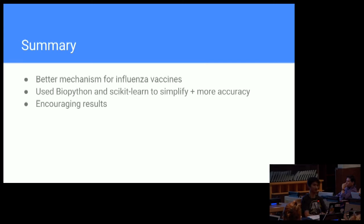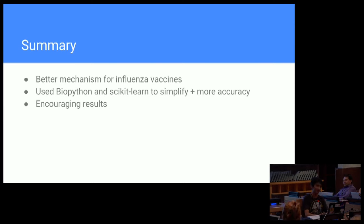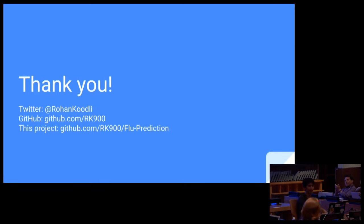To sum it all up, I wanted to create a better way for scientists to make vaccines for the flu. How I went about doing that was to predict how the flu would change in the coming years, so that scientists could create vaccines specifically tailored towards them. I used BioPython and scikit-learn to simplify my algorithm, and the results look very encouraging. Thank you all very much.